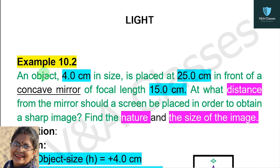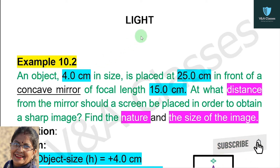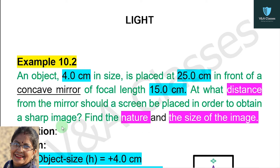Students, hope you are doing well. In this video, we will discuss example 10.2 from the chapter on light. The question is: an object 4 cm in size is placed at 25 cm in front of a concave mirror of focal length 15 cm. At what distance from the mirror should a screen be placed in order to obtain a sharp image? Find the nature and the size of the image.